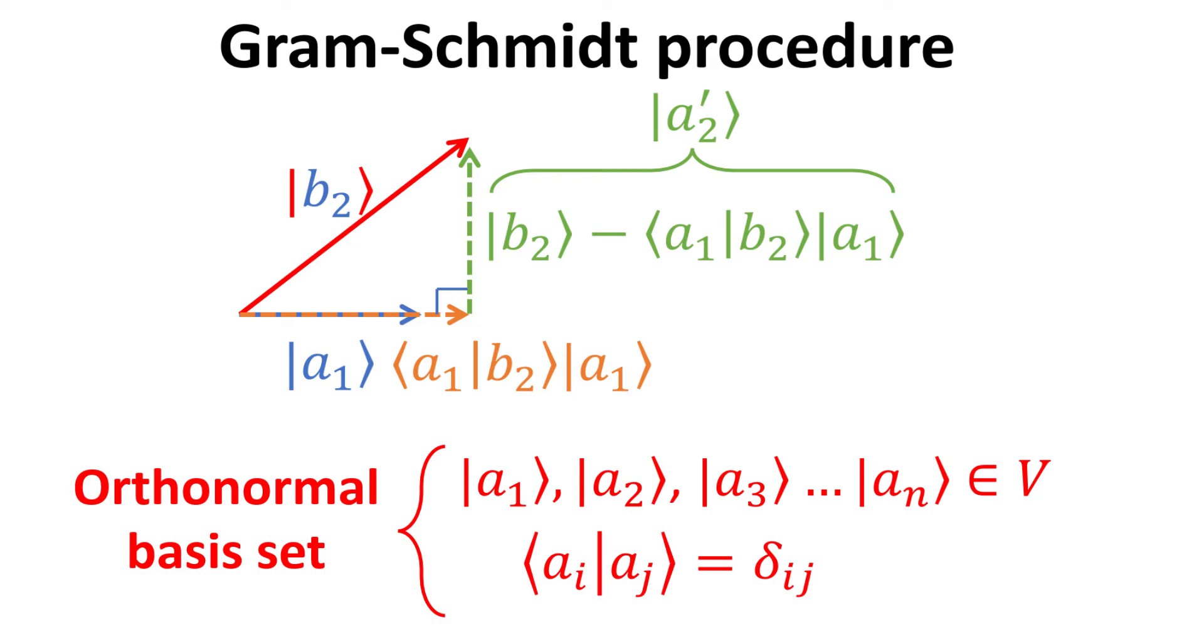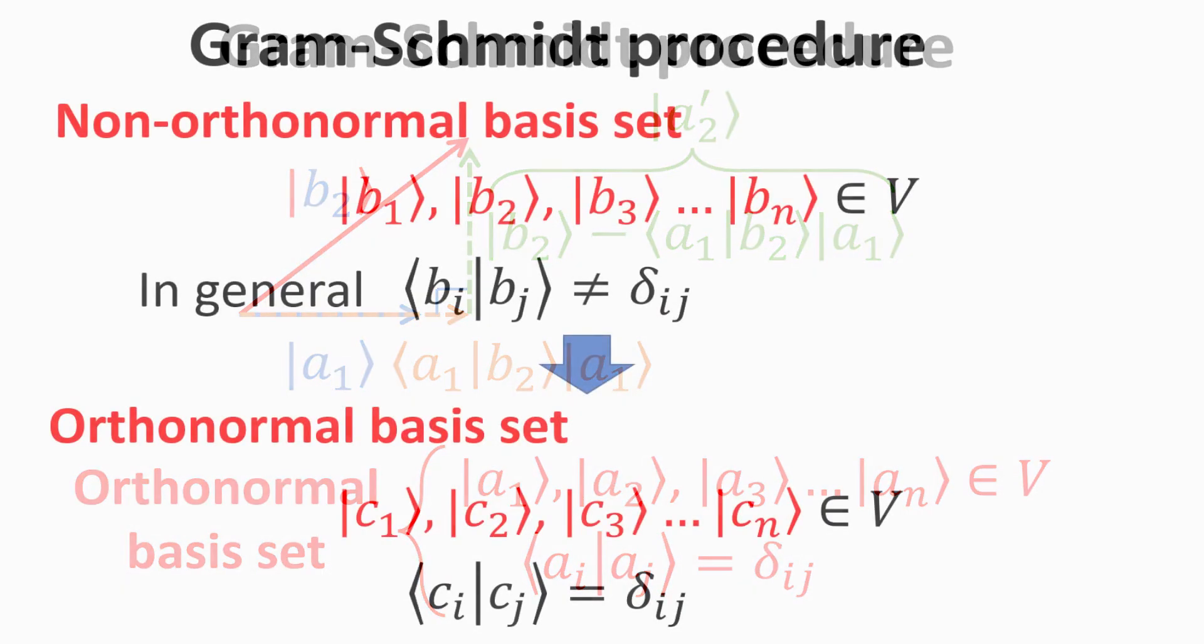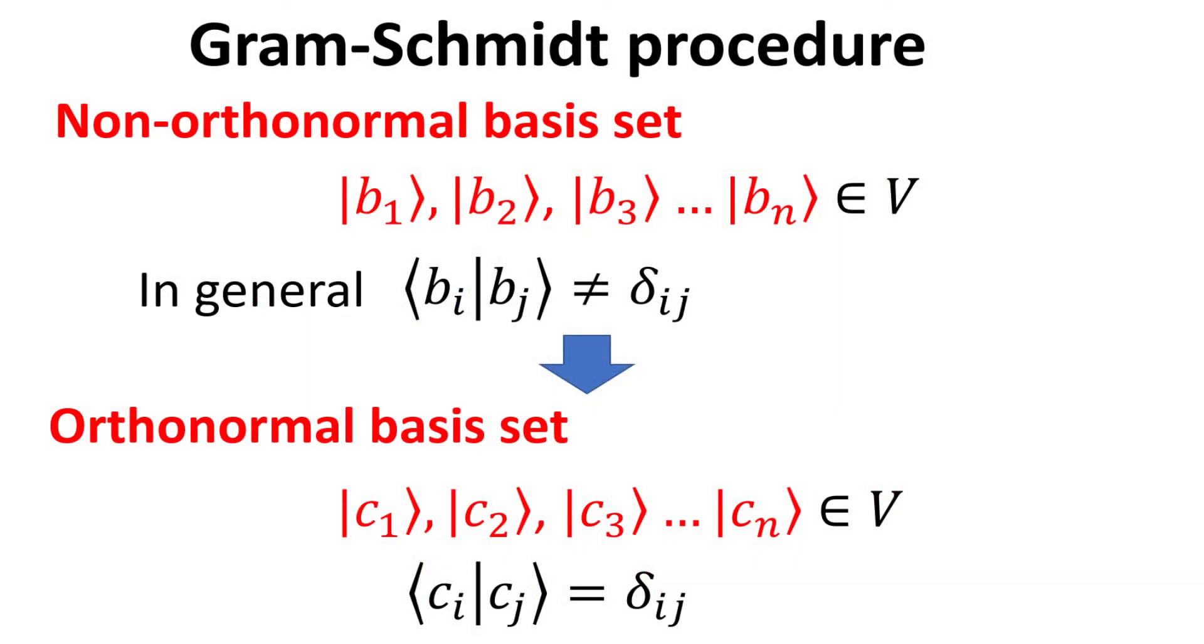Starting from a basis set B which is non-orthonormal, we begin with a non-orthonormal basis set B1, B2, and so on up to Bn that spans an n-dimensional complex vector space. In general, these vectors are not orthogonal with one another. Thus their inner product B_i with B_j does not satisfy the Kronecker delta function.